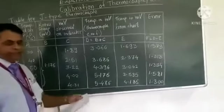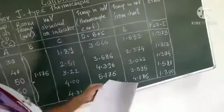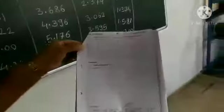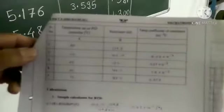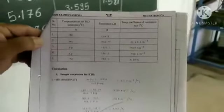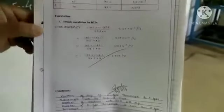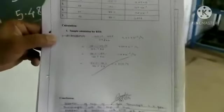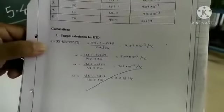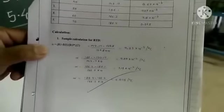And for RTD you can see the table. Here we have to take the same readings with the resistance values. And we have to find out the temperature coefficient of resistance. The formula is given here. Alpha is equal to R1 minus R0 divided by R0 into delta T.